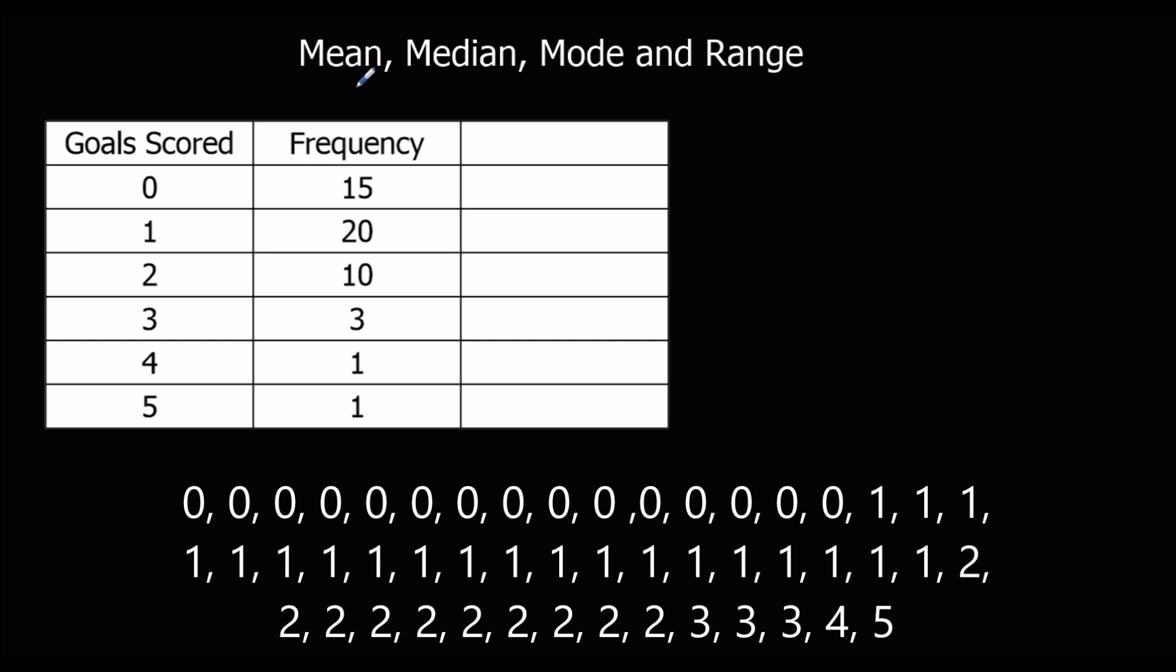So there are 15 zeros. If we're working out the mean, we need to add up all the numbers. So we need to add up the 15 zeros. So 15 zeros, 15 times 0 is actually 0. So 15 zeros are 0.